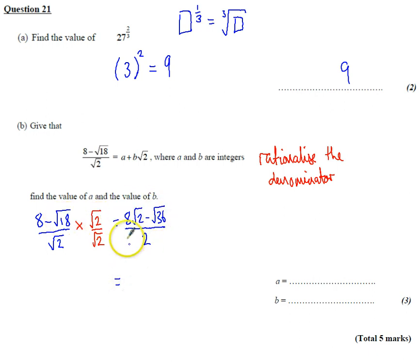Following that through, I get 8 root 2 minus 6 over 2, where I can simplify root 36 to 6. Then I'm just going to halve both sections, so 8 divided by 2 is 4, giving me 4 root 2 minus 3.